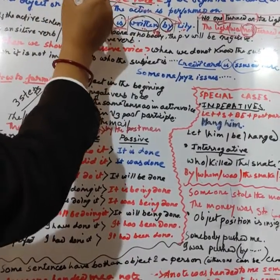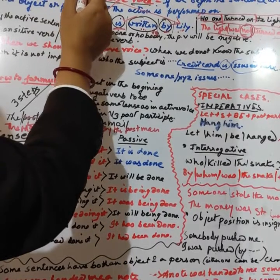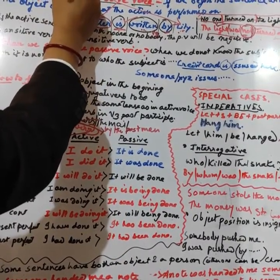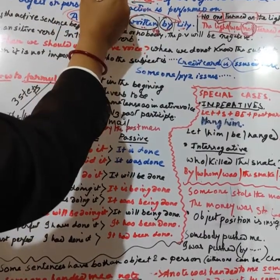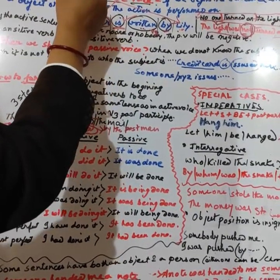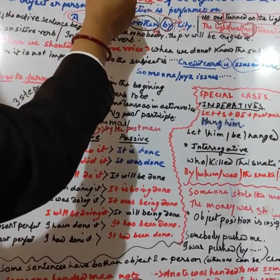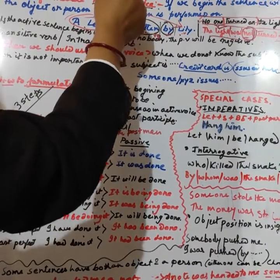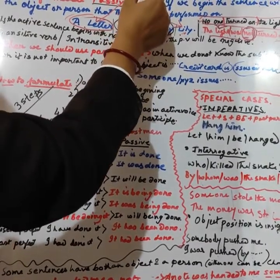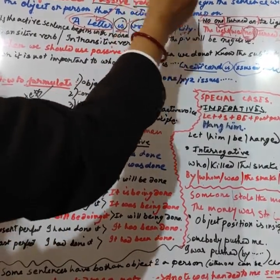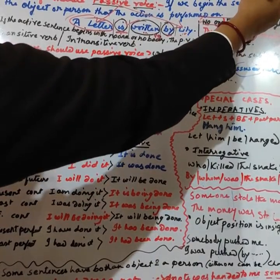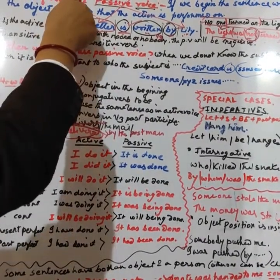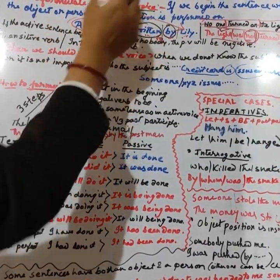The construction of active voice: a sentence generally begins with the subject, who is the performer of the action. Then comes the action word or verb in its root form, followed by the object. So the structure is subject plus verb plus object.